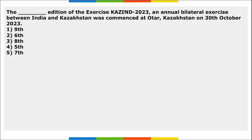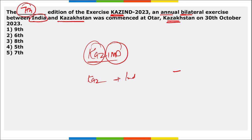The 7th edition of the Kazind exercise — an annual bilateral military exercise between India and Kazakhstan — was held in Kazakhstan on 30th October. The name Kazind stands for Kazakhstan and India. The Indian contingent was led by 90 personnel from the Dogra Regiment of the Indian Army.